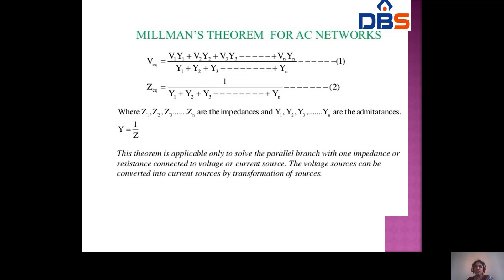In Millman's theorem, Y1, Y2, Y3, ..., YN are the admittances where Y = 1/Z. This theorem is applicable only to solve parallel branches with impedances or resistances connected to voltage or current sources. The voltage source can be converted to a current source or vice versa using the source transformation technique.